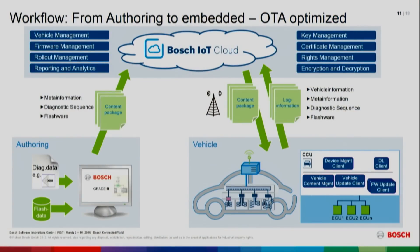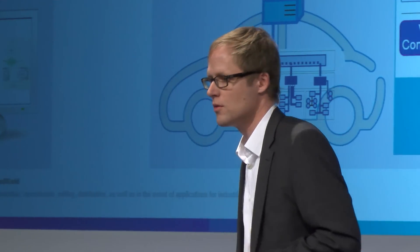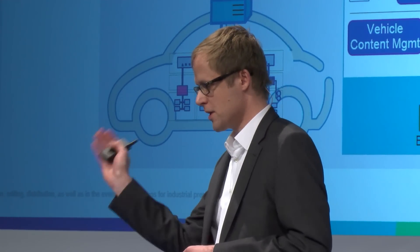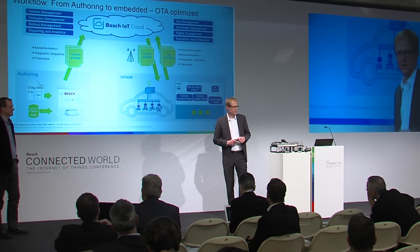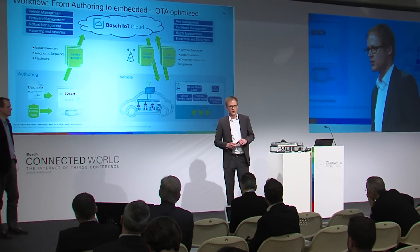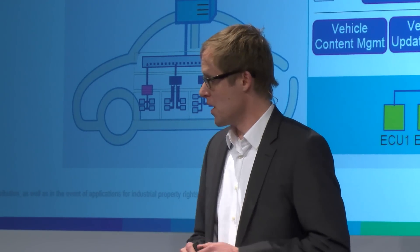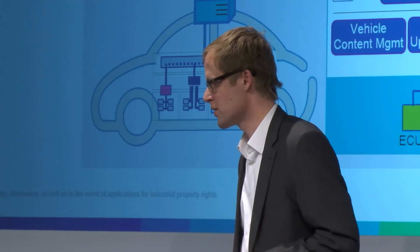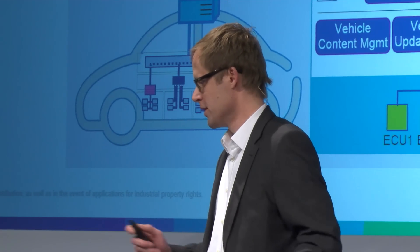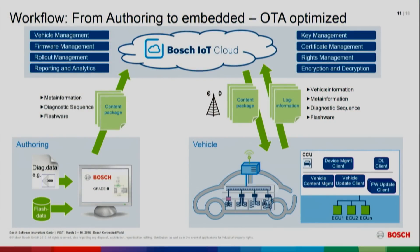This is uploaded to the Bosch IoT Cloud, and then all the IoT services come in that run on the cloud, like vehicle management, firmware management where update packages are managed, and rollout management. A very important part is also reporting and analytics, because everything needs to be documented and traceable. Of course, on the security side there are key management, certificate management, encryption and decryption services — certainly very important for firmware updates going into the vehicle powertrain.